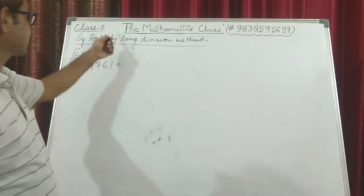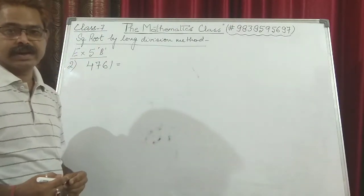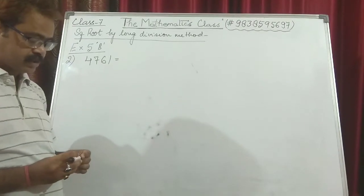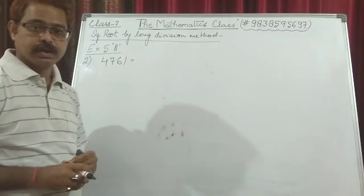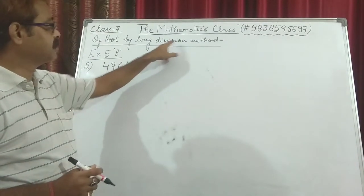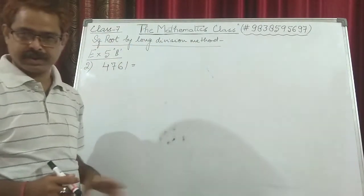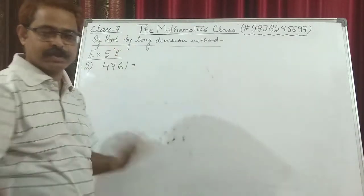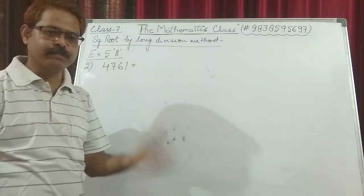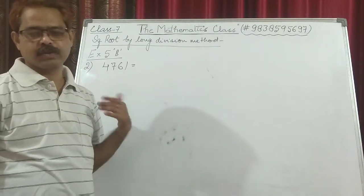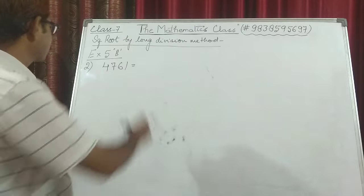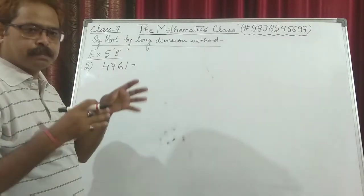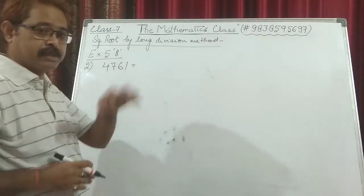This class is for Class 7 in continuation with the previous class. Today we will be discussing finding the square root by division method, or long division method. Some books call it division method and some call it long division method. I am starting directly with the exercise — with the help of questions I will be explaining the process of how to find the square root.